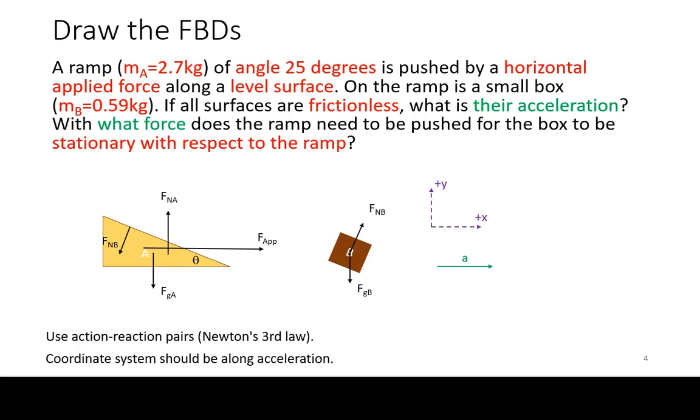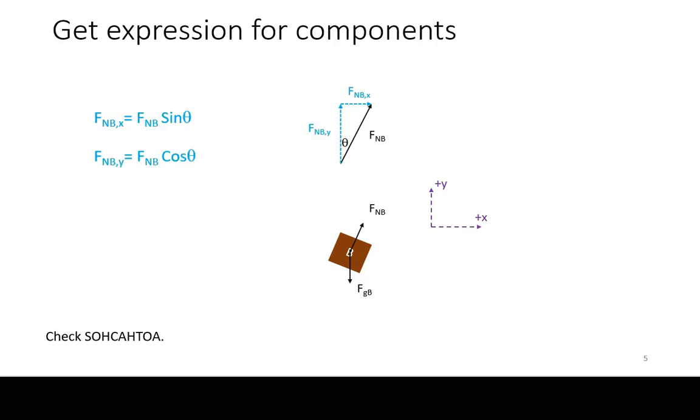As always, we follow up with the free body diagrams of the objects involved. Note the action-reaction pair for the interacting objects. Because the acceleration is horizontal and common to both objects, we set up our coordinate system also horizontally. The only force that needs its components expressed is the normal force between the objects.